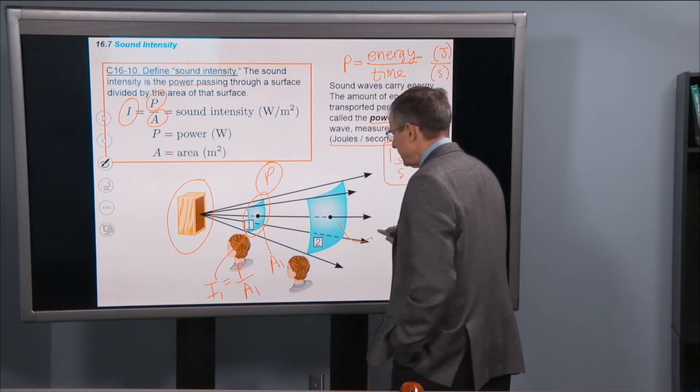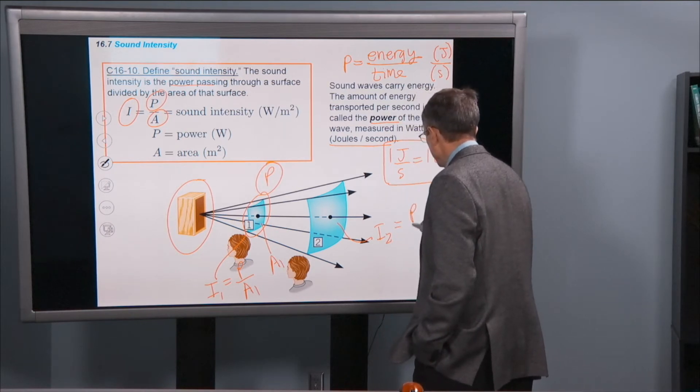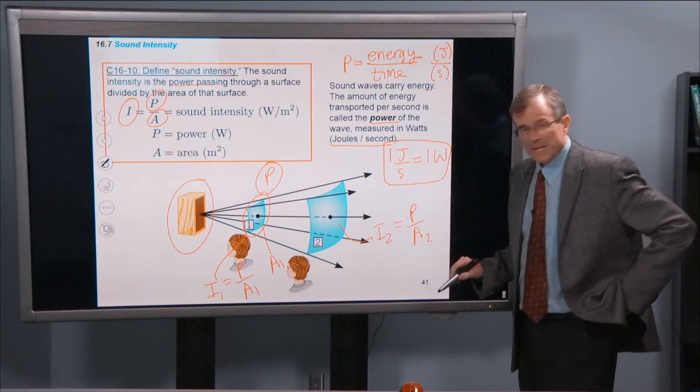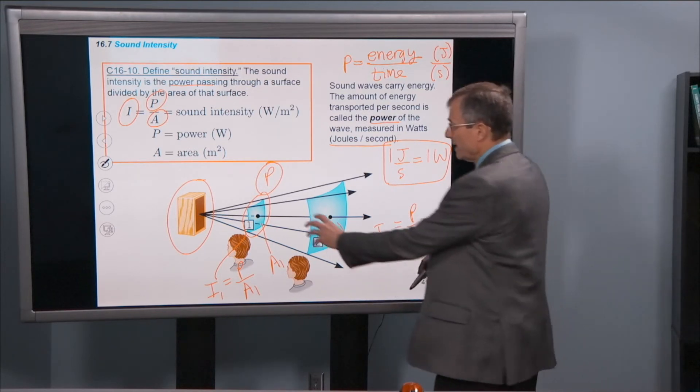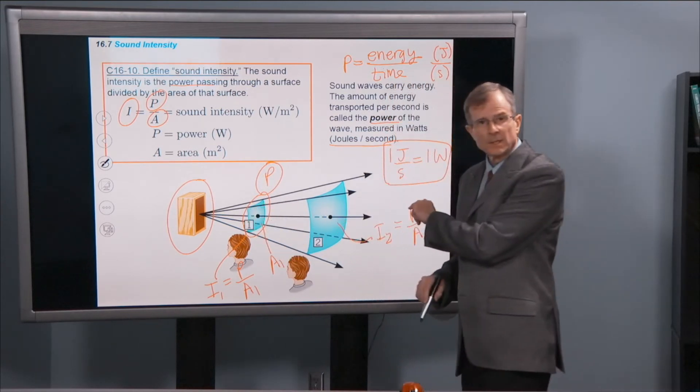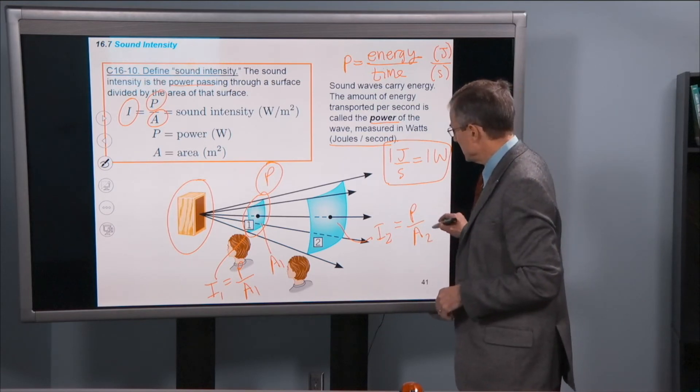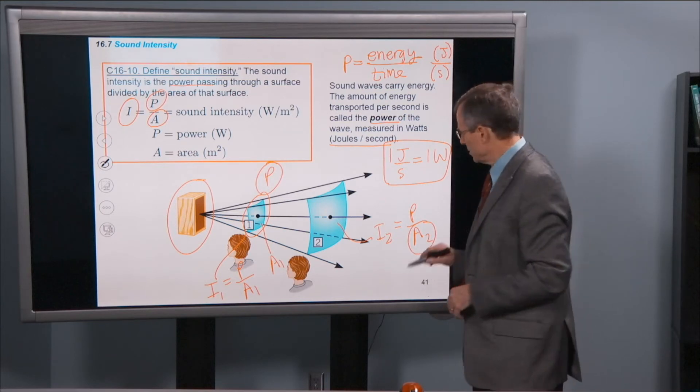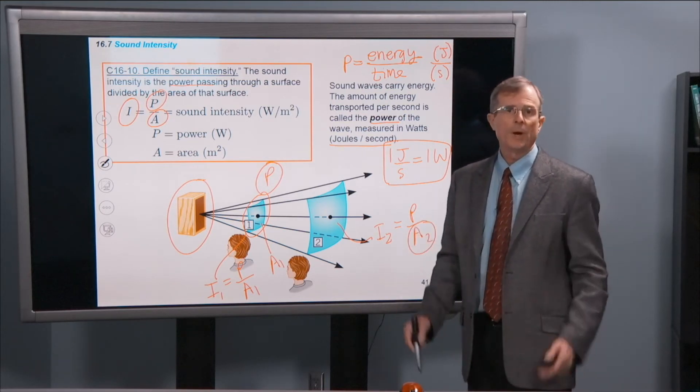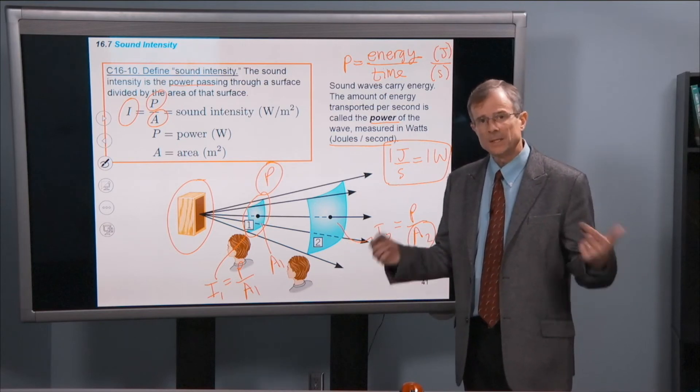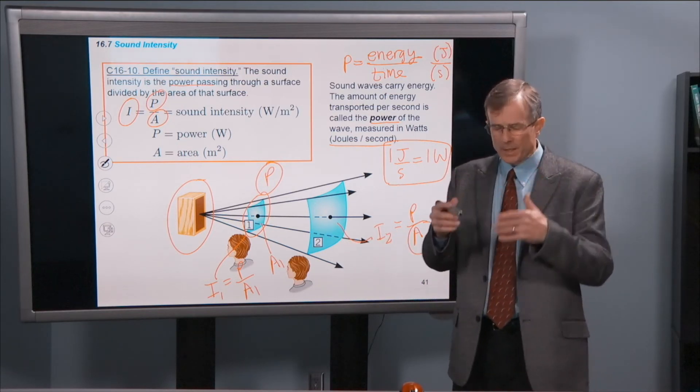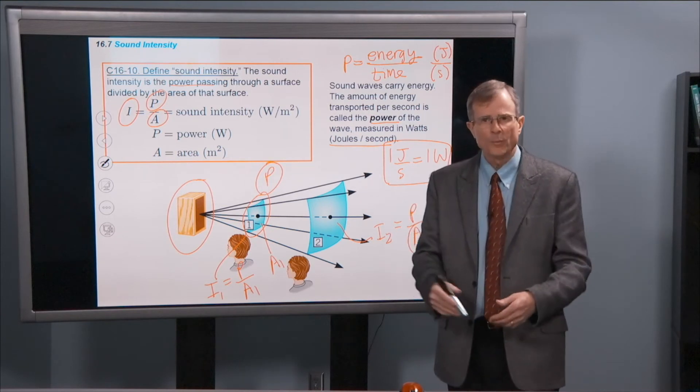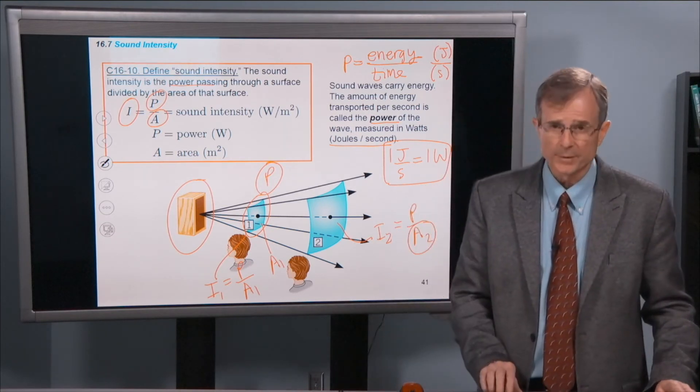Well, what about the intensity here? Same power. Talking about the same amount of power passing through here as here. The difference is that the area is now larger. And so if the area A2 is larger than A1, then the intensity is going to be less. The way to think about it is how much power is spread out over a particular area. It's a power per unit area for intensity.